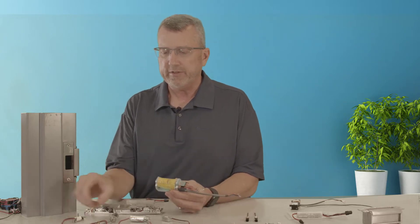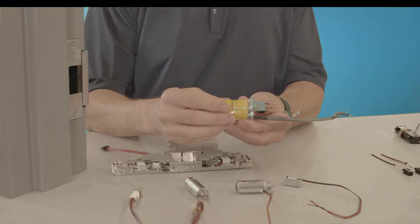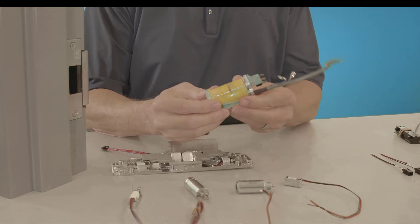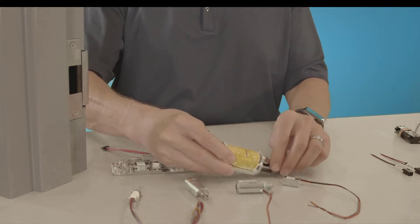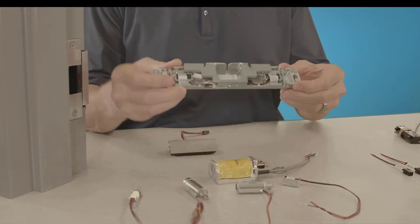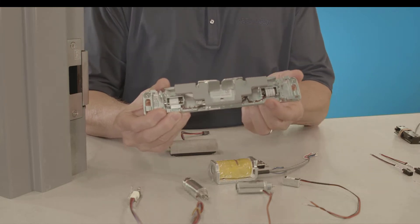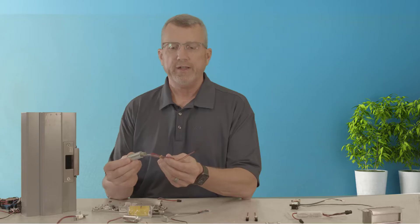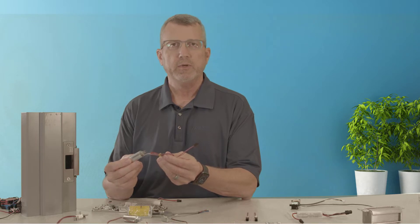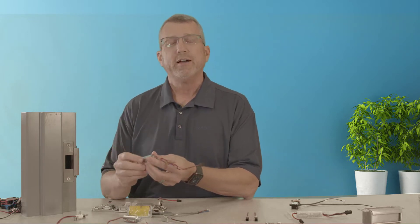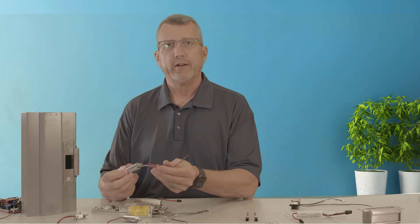As you can see, solenoids come in different sizes and shapes. A solenoid in the security industry is a very generic term that we use for a device which can convert electrical energy into mechanical energy. We find solenoids in many different products within our industry, from electric strikes, electrified lever sets, electrified mortise lock sets, and even electrified bars.